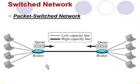These examples show that the packet switch network is more efficient than the circuit switch network, but packets may encounter some delay if the capacity of the communication link is fully occupied.